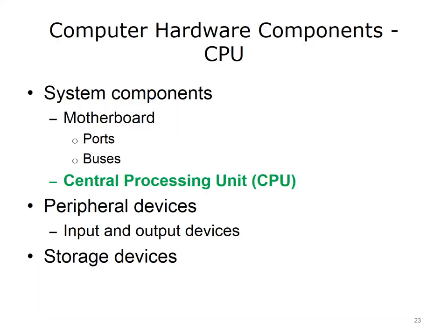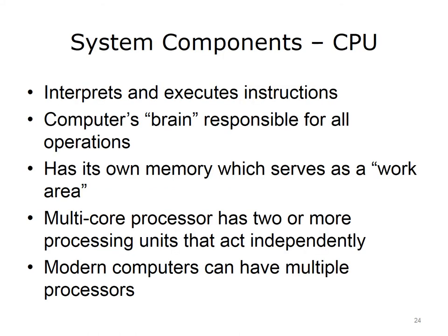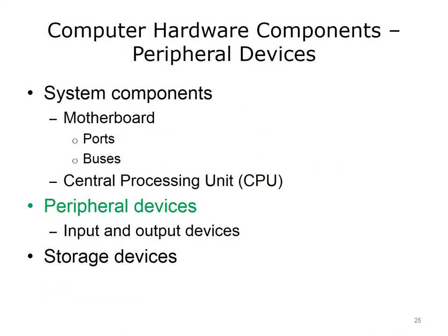Referring back to our list of computer hardware components, our next topic is the central processing unit. The CPU interprets and executes instructions given by a program and may be called the brain of the computer — it is responsible for all of the computer's operations. The CPU has its own memory called Synchronous Dynamic Random Access Memory, or SDRAM, which serves as a work area for the CPU. A multi-core processor is a CPU with two or more processing units known as cores that act independently of each other. Modern computers can have multiple processors.